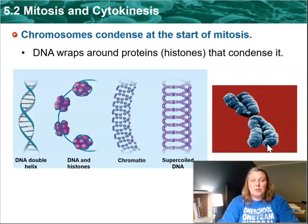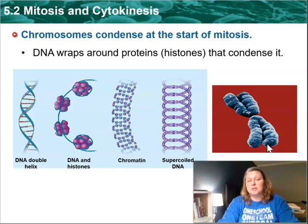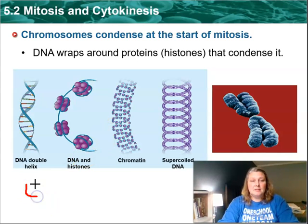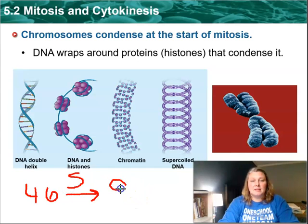During synthesis, remember you made a copy of your DNA. You have 23 pairs, or a total of 46 chromosomes — you received 23 from your mom and 23 from your dad. So during synthesis, you make a copy. You started with 46, you go through synthesis — that S phase — and you're going to end up with 92.